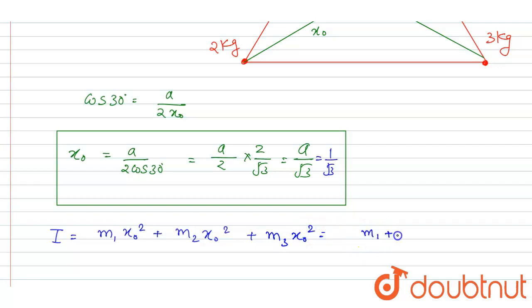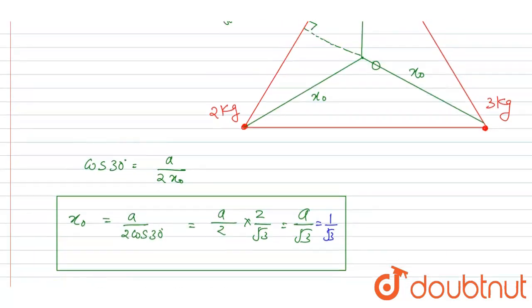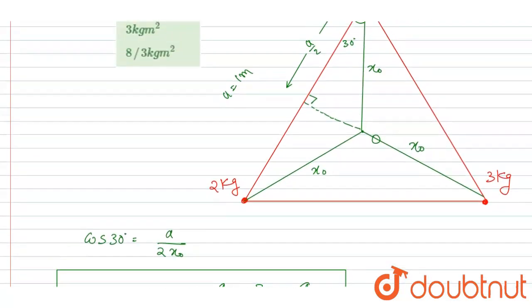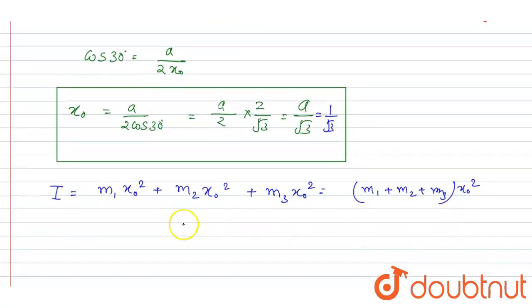...x_naught is common here, so I can take x_naught outside and I will write (m₁ + m₂ + m₃) x_naught² will be the answer. So the masses are 1, 2, and 3, so 1+2+3 equals 6, and x_naught² is 1/3.